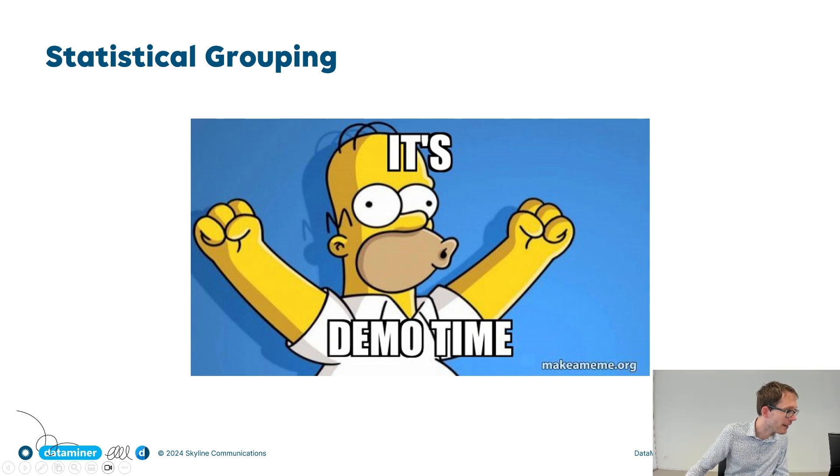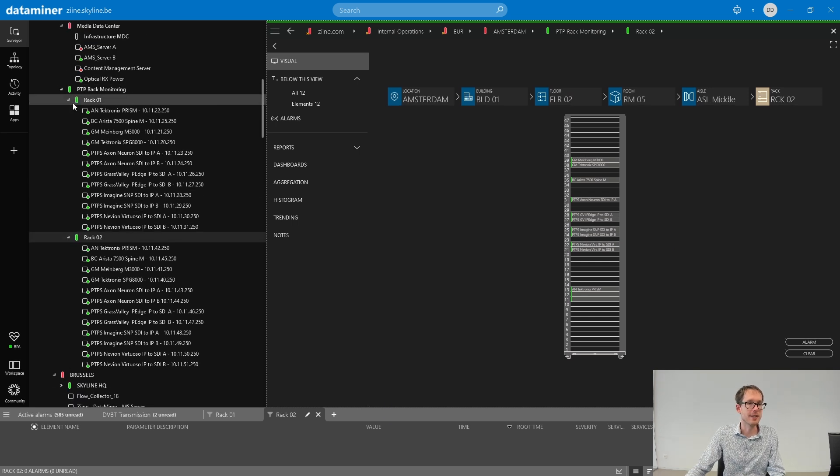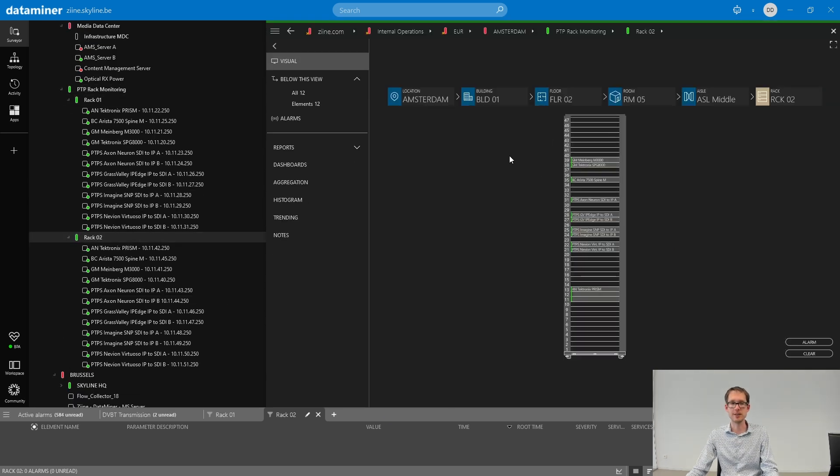So let's dive into this. I'm going to take my DataMiner, my Zine system to begin with, and we're going to look at these two identical setups. We have rack one as a setup and we have rack two as a setup. Now at first glance, these setups are completely identical, right? But of course there's more to it.